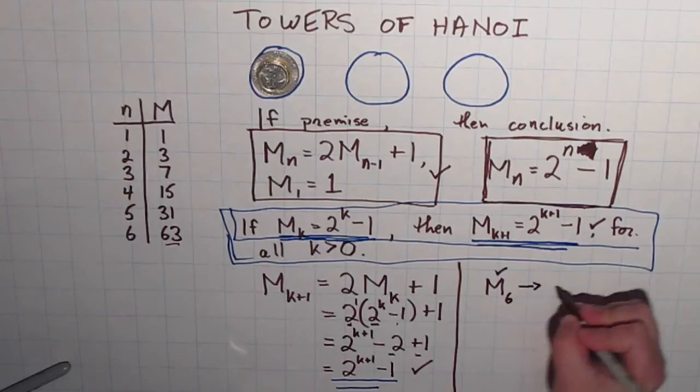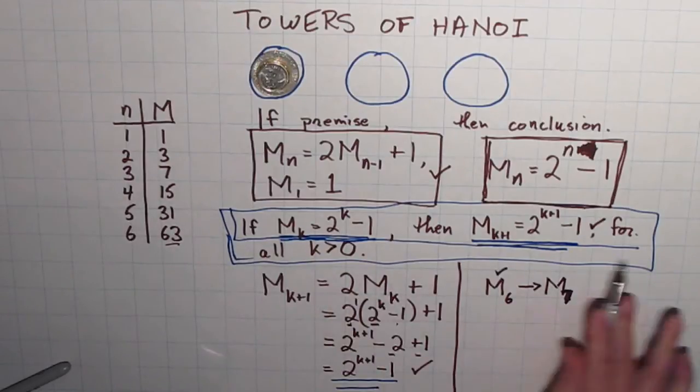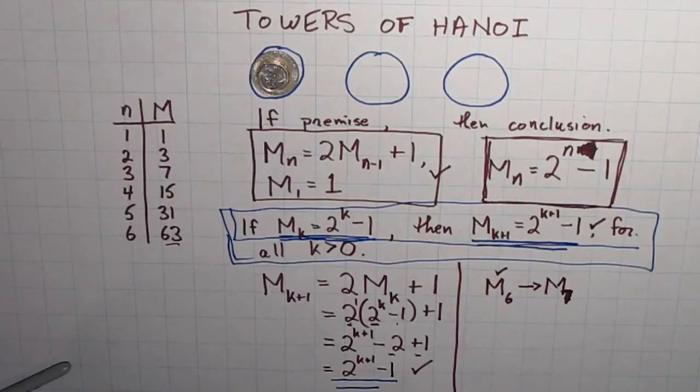Oops, that should be a 7. And because I proved this statement that I squared off in blue, I know now for a fact it'll work for 7 coins. I don't have to do the arithmetic. I don't have to figure it out and move coins around or anything. I know that for a fact because of this.